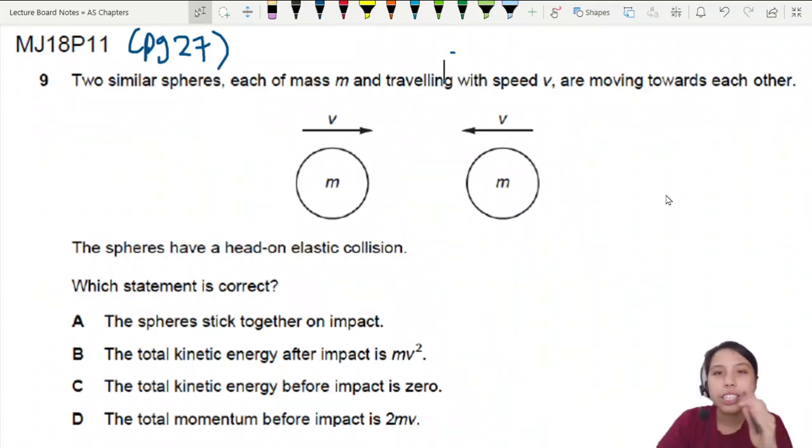In this past year question, imagine that you have two similar spheres, each same mass traveling with the same speed but different direction, moving towards each other.